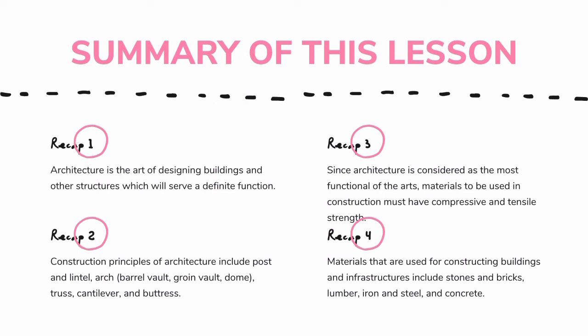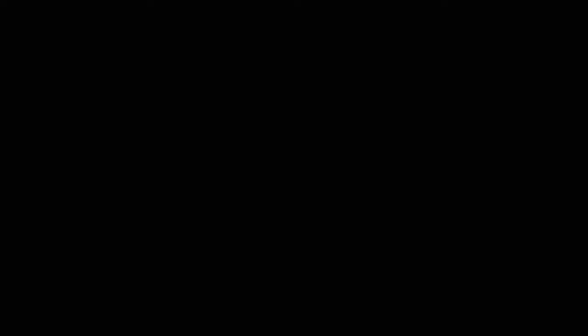Recap number three: Since architecture is considered the most functional of the arts, materials used in construction must have compressive and tensile strength. Recap number four: Materials used for constructing buildings and infrastructures include stones and bricks, lumber, iron and steel, and concrete. Architecture is a visual art, and the buildings speak for themselves.